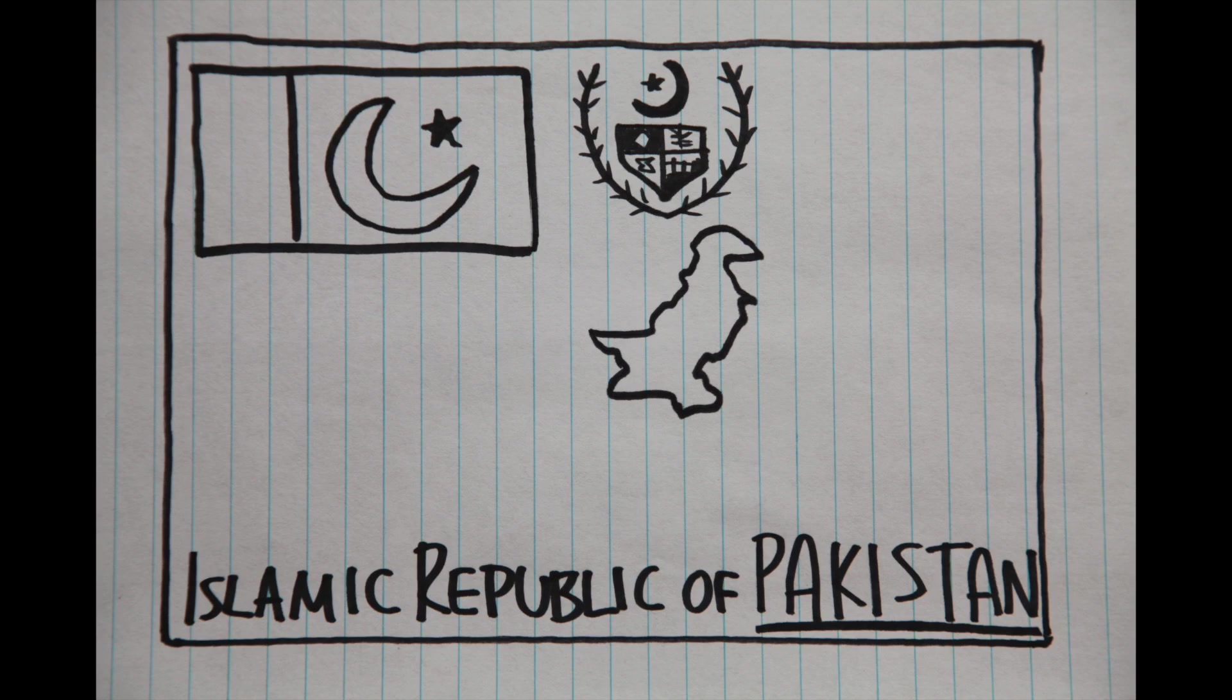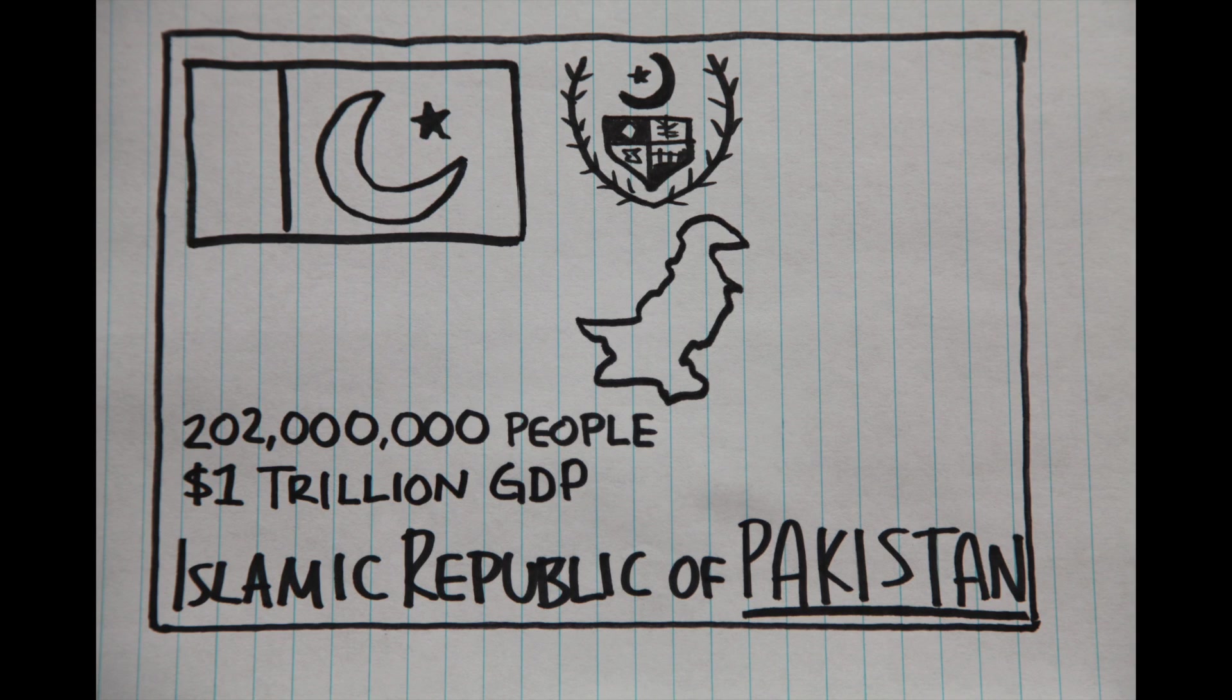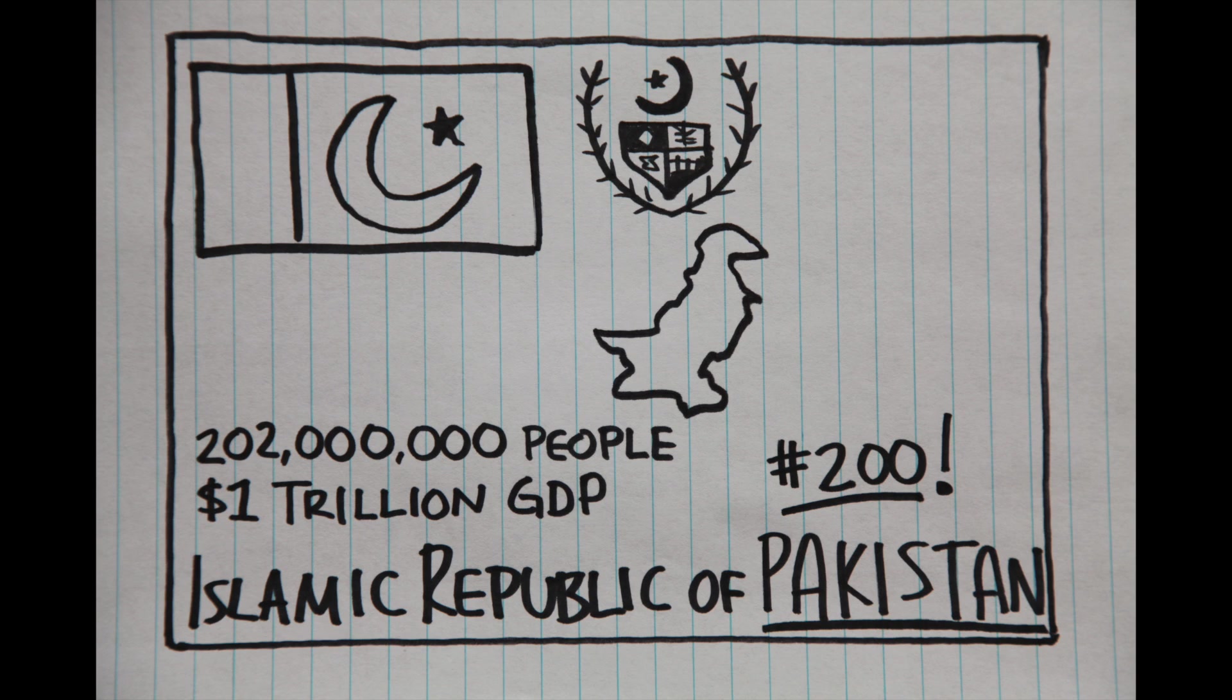But not to be outdone, the Islamic Republic of Pakistan, with its 220 million people population and its 1 trillion dollar gross domestic product, rests comfortably at an even number 200. Good job fellas, and thank you for watching.